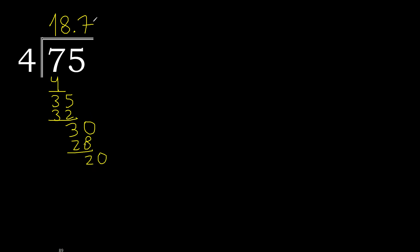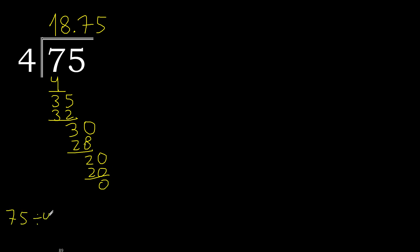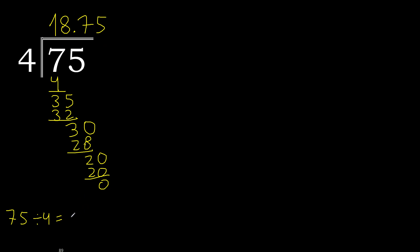Bring down: 20. 4 multiplied by 5 is 20. Subtract: 0. Therefore complete. 75 divided by 4 is complete.